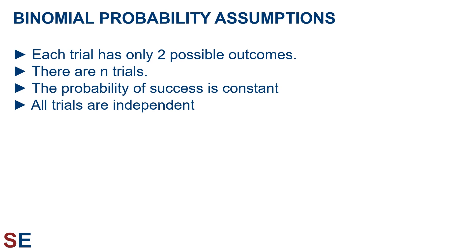Second, there are n trials. When we do binomial probability calculations, we need to know exactly how many trials are being performed. Third, the probability of success of each trial is constant as we do the trials, which allows us to use one probability value for all trials. Fourth, all the trials are independent, meaning the results of early trials have no influence on the results of later trials. This also allows us to use the same probability value for all the different trials.